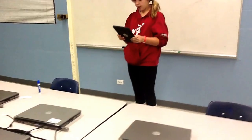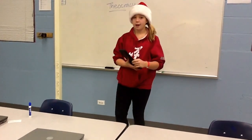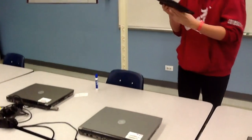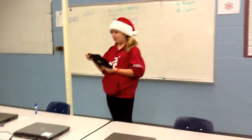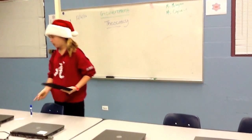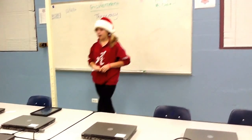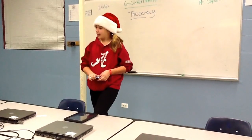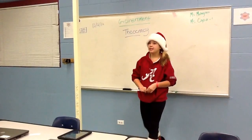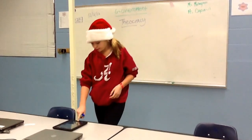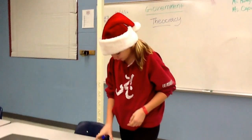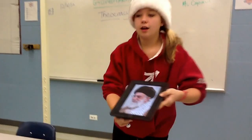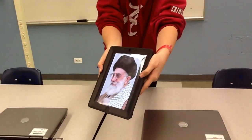Here is a picture — I believe this is of Iran. I'm going to give Peyton permission to go on her iPad and find a picture of Saudi Arabia. While she's doing that, we're going to talk about the two rulers. The ruler of Iran, his name is Ali Khamenei, I believe. Let's pull up a picture of Ali Khamenei on the iPad. Ah, here he is — this is what Ali Khamenei looks like.